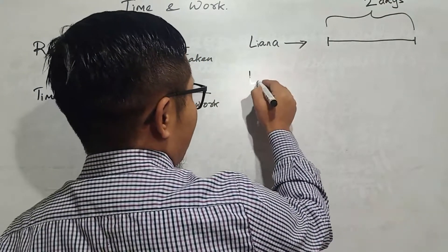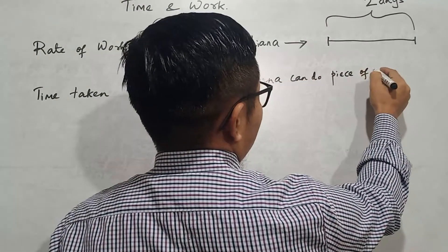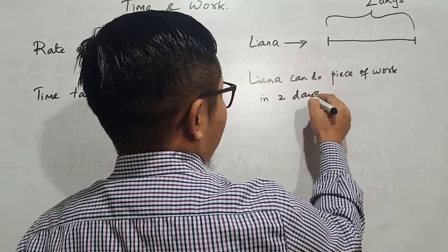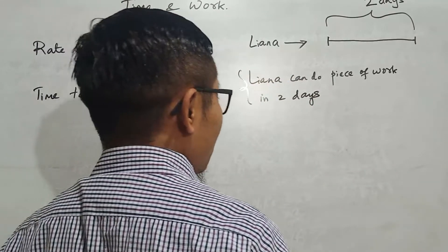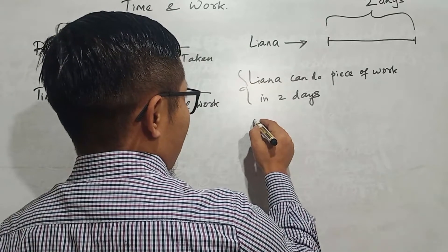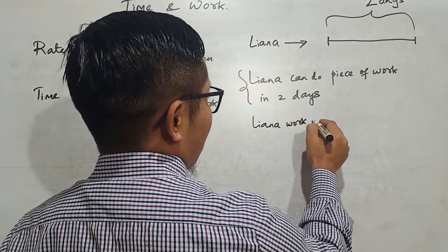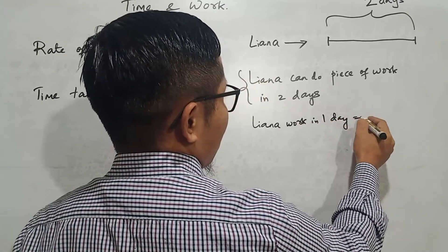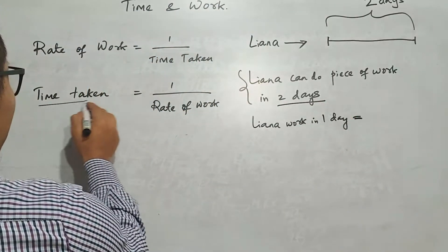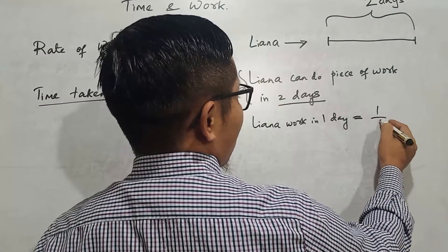Liana can do a piece of work in two days. So, Liana's work in one day equals one divided by time taken, which is one divided by two. Time taken equals one divided by rate of work — in two days, the work done in one day is one by two.